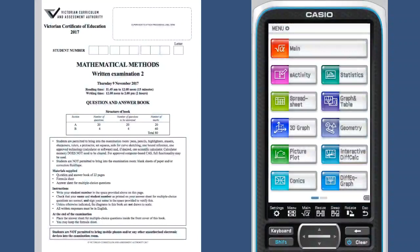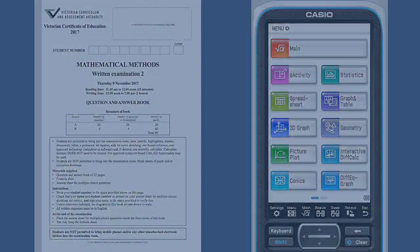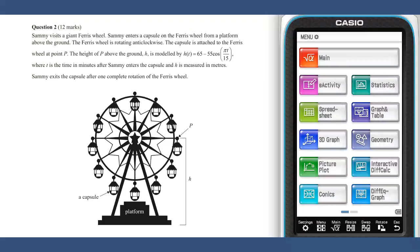This video will show solutions to the 2017 VCE Mathematical Methods Written Examination 2, Section B, Question 2. This question concerns a trip on a Ferris wheel that sounds a little bit like the famous London Eye. The height of the capsule of the Ferris wheel is given by the function h of t equals 65 minus 55 cos pi t over 15.